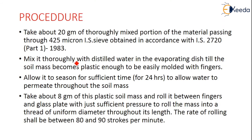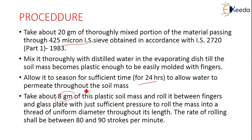For the procedure, take 20 grams of thoroughly mixed material passing through the 425 micron sieve. Mix it with distilled water until the soil mass becomes plastic enough to be easily molded with fingers. Allow it to season for about one day to allow water to permeate throughout the soil mass. Then take about 8 grams of this plastic soil mass and roll it between the fingers and a glass plate with just sufficient pressure to form a thread of uniform diameter throughout its length.